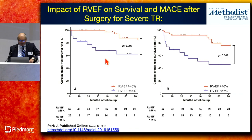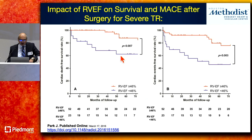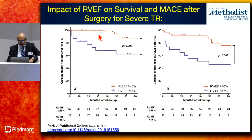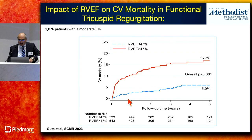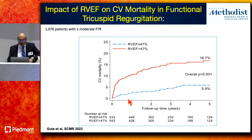A Korean group looked at patients going for tricuspid valve surgery, finding that RV ejection fraction less than 46% in the setting of significant TR was associated with worse survival. A recent study from our group in over 1,000 patients with moderate or severe functional TR found an RV EF threshold of about 47% was the best stratifier between adverse and favorable prognosis.